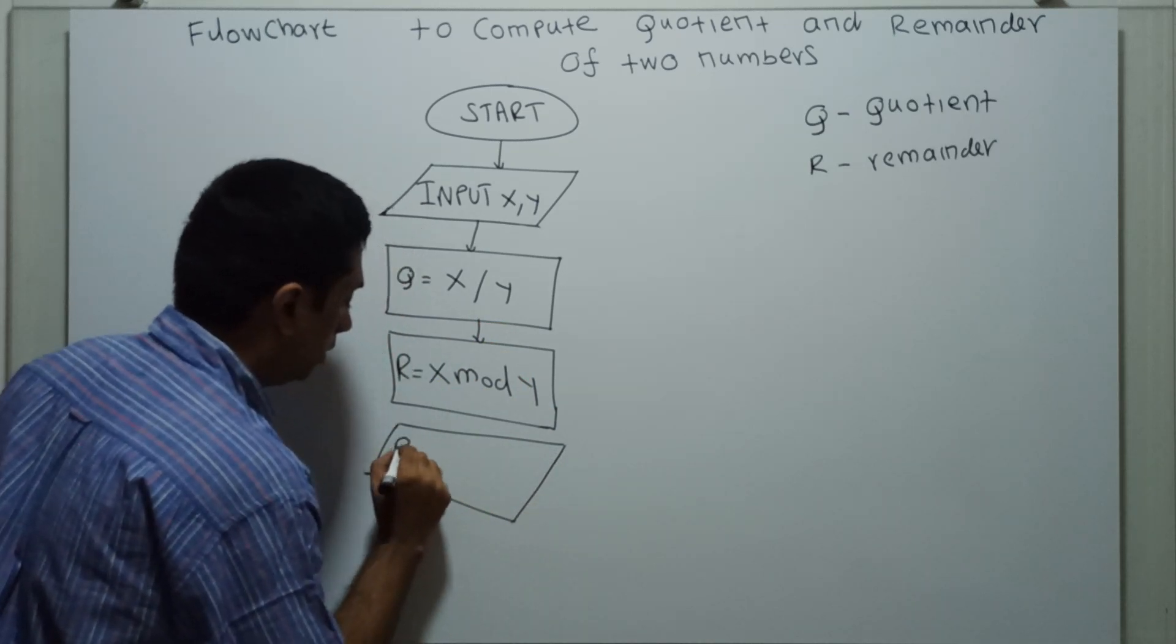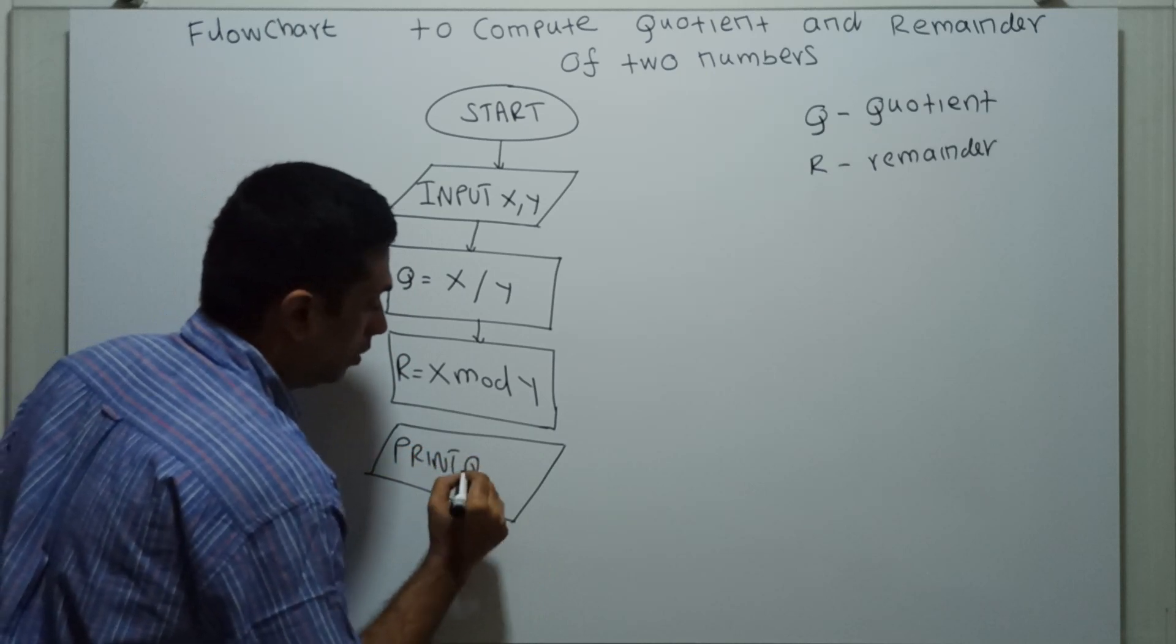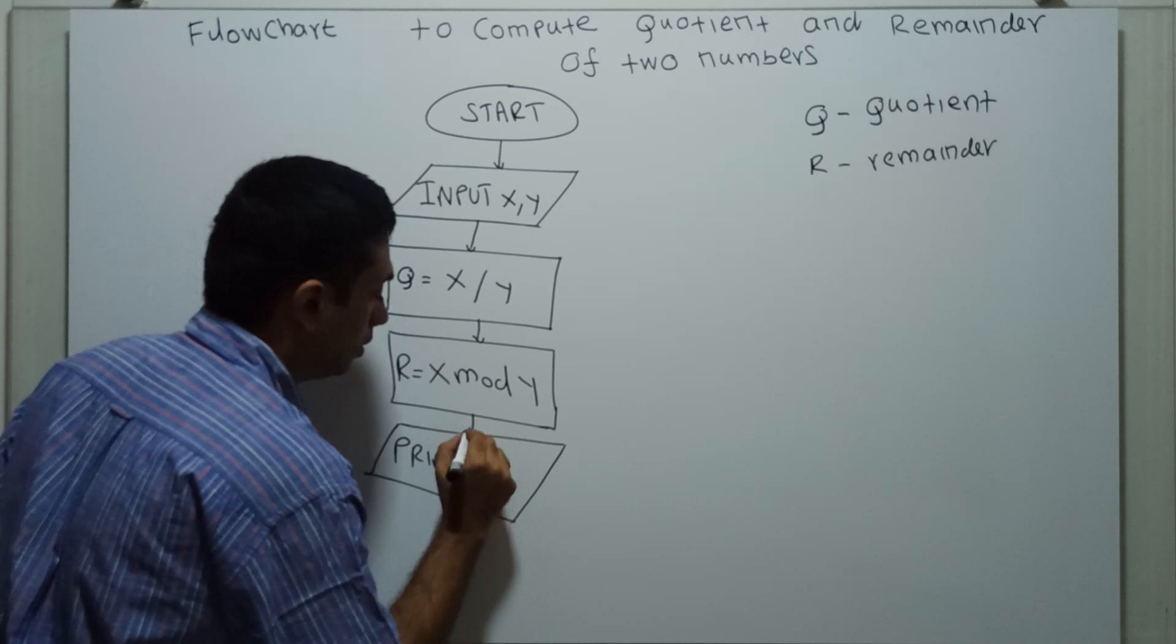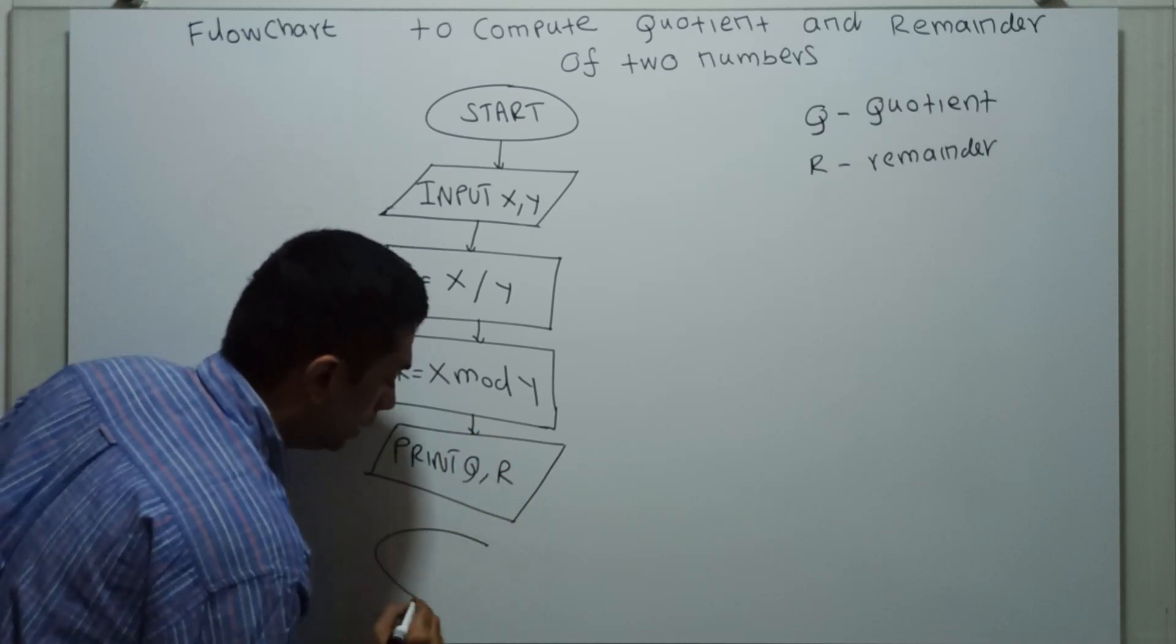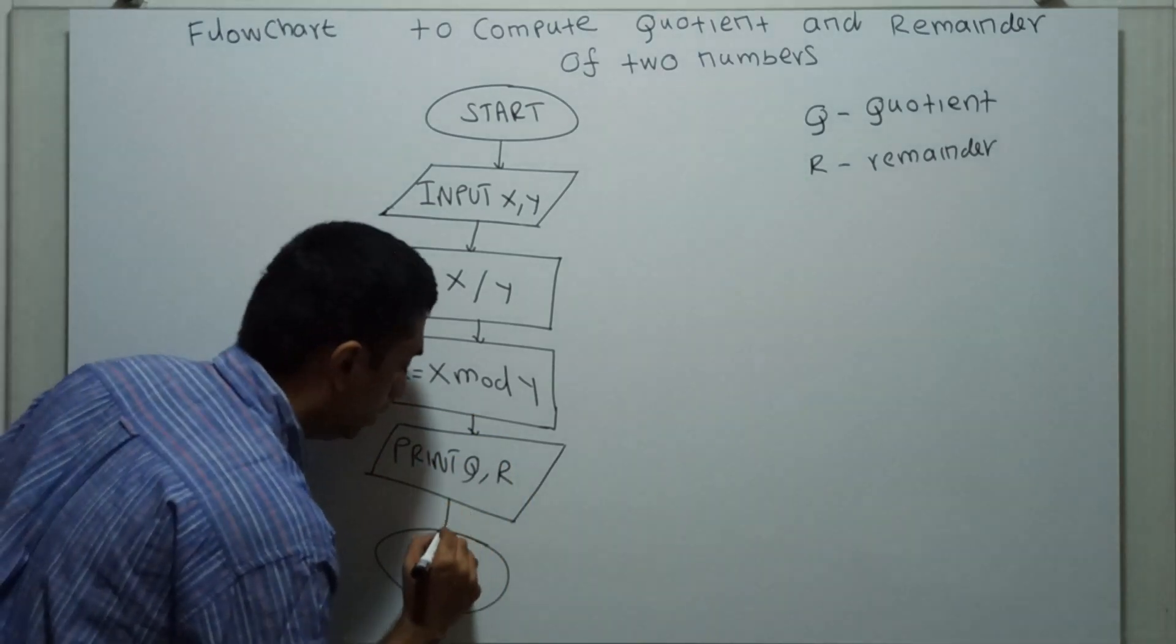Now I am printing quotient and remainder. Next I am ending the flowchart by the logical end of the flowchart.